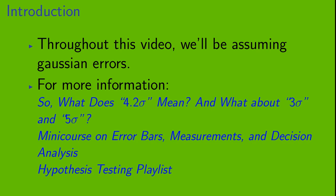And I should mention, throughout this video, we will be assuming Gaussian errors. We're not going to go into Gaussian errors in any detail, so if you'd like more information on that topic, there are a few places you can look. First, you might want to check out the video, so what does 4.2 sigma mean, and what about 3 sigma and 5 sigma? You might also be interested in the playlist, the mini-course on error bars, measurements, and decision analysis. And lastly, you might also want to check out the videos in the hypothesis testing playlist.